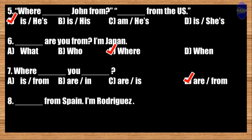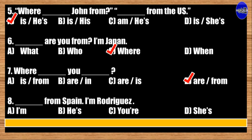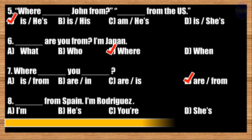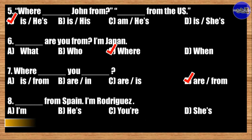Number eight: Blank from Spain. I'm Rodulgus. A: Am; B: His; C: You; D: Sis. The correct answer is option A. I am from Spain. I am Rodulgus.